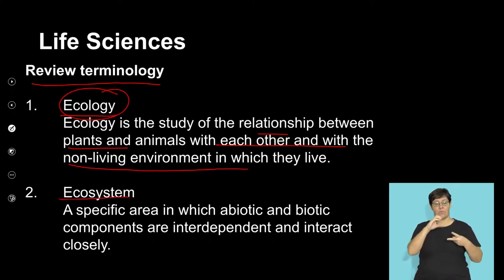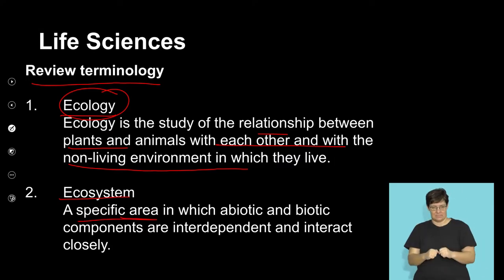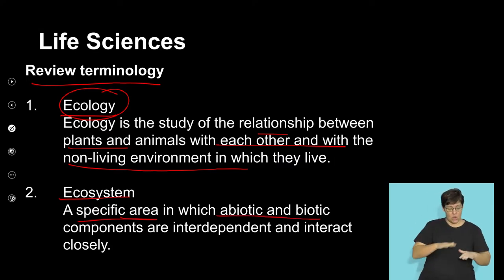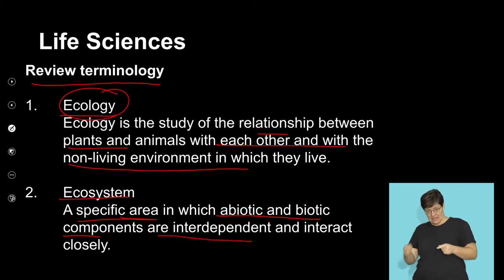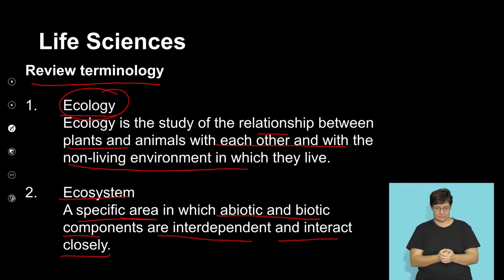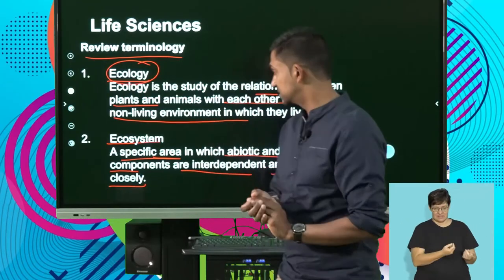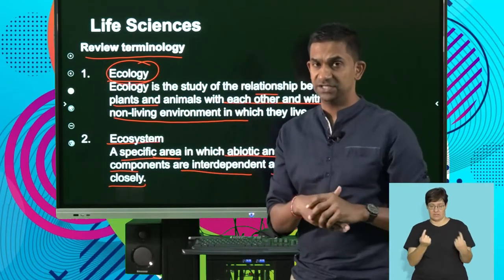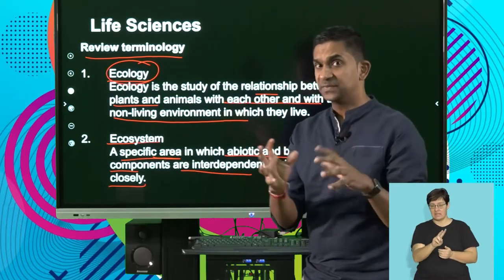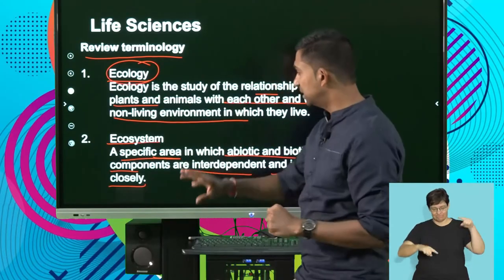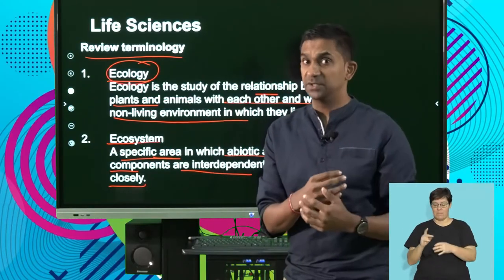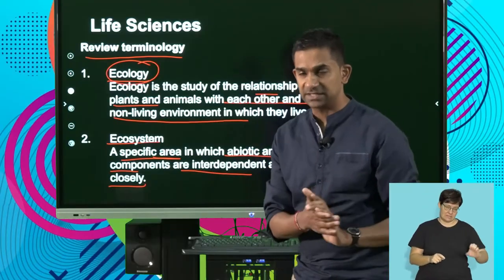An ecosystem is a specific area or system in which the abiotic and biotic components are interdependent and interact closely. Ecosystems are areas where organisms, which are the biotic factors, interact with the non-living environment, and we notice that ecosystems vary depending on the interactions that exist between the biotic and abiotic factors.